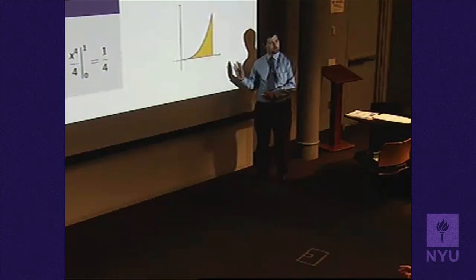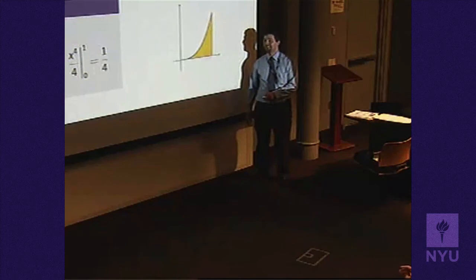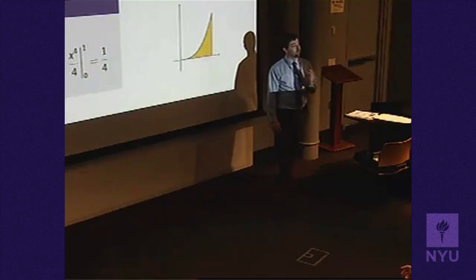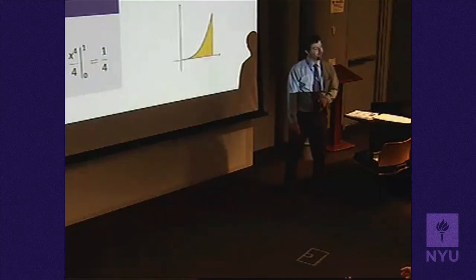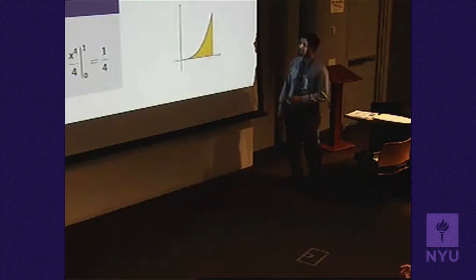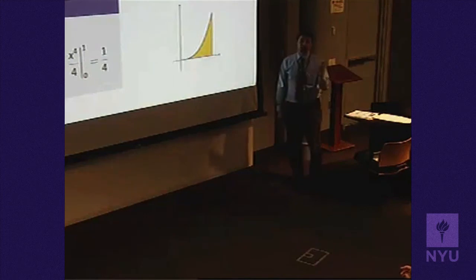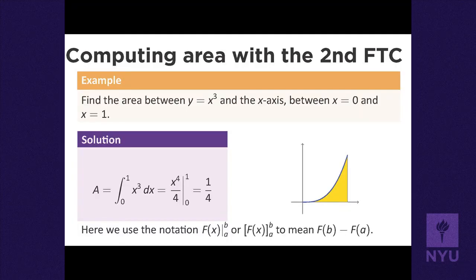The basic idea is: find an antiderivative and subtract its values at the two endpoints. The vertical bar notation with superscript and subscript means plug in the superscript, plug in the subscript, and subtract.